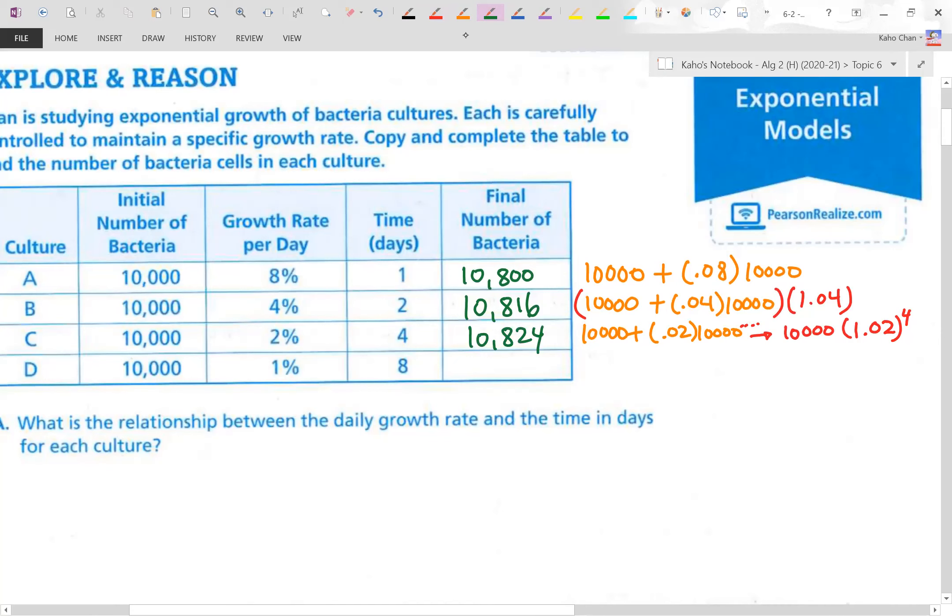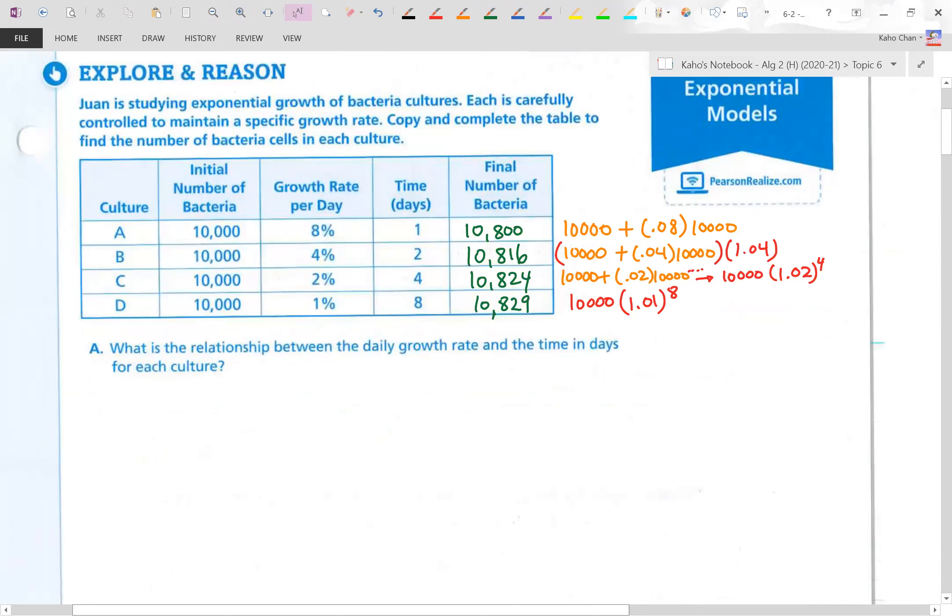And finally, for eight days, let's just don't have to manually write this all stuff out. We're going to literally write down 10,000 times the multiplier of 1 percent, 1.01. And we're doing it eight days in a row. And when you punch it into the calculator, you'll get 10,829 little bacteria. So that's a great way of looking at how things can compound itself, so to speak.